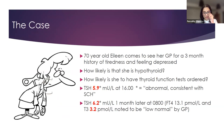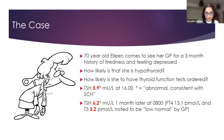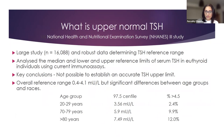We get a repeat TSH a month later and it's 6.2 mU/L — slightly higher. This time it was done at 8 o'clock in the morning. The free T4 is 13.1, which is normal according to our lab data, and T3 is 3.2 mU/L, noted as low-normal by the GP and flagged as abnormal. The question is: are these values really abnormal?